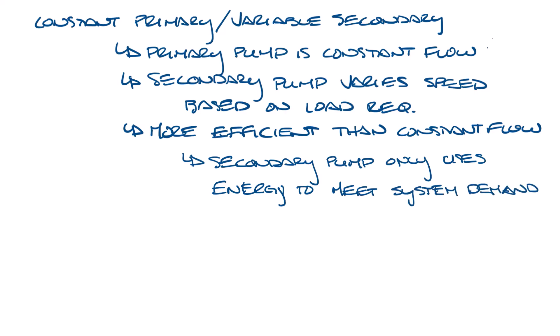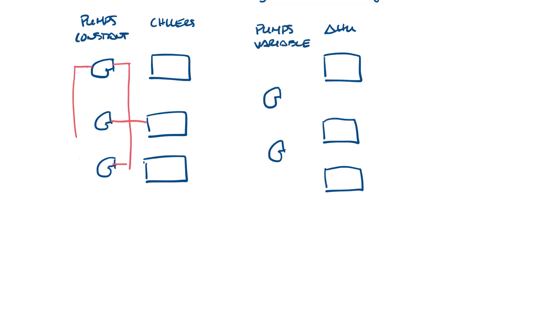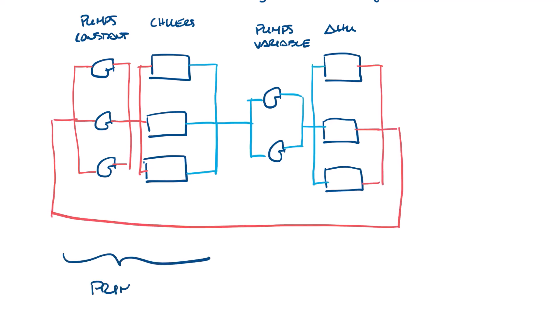Let's move this up and draw this. Let's use the same three pumps, chillers, and air handlers. But we're also going to have secondary pumps here. These are constant and these are variable. Now let's draw in the water flow and label the primary and secondary loops. The system has a bypass here, also known as the decoupler pipe, because it decouples the primary and secondary systems.